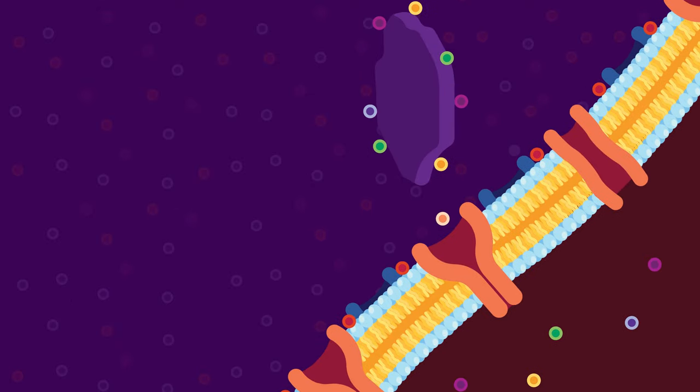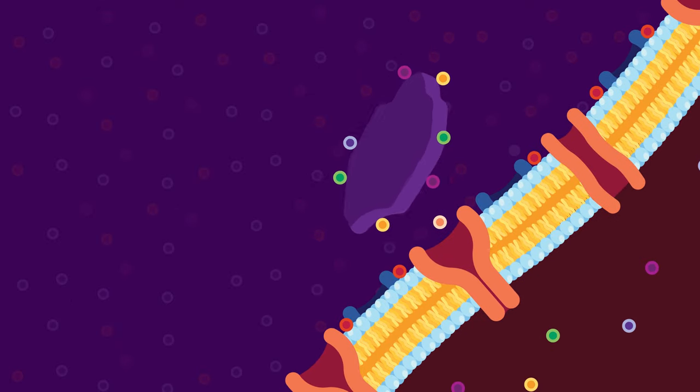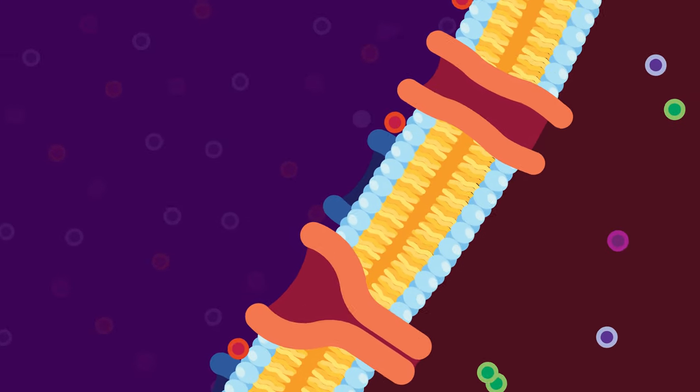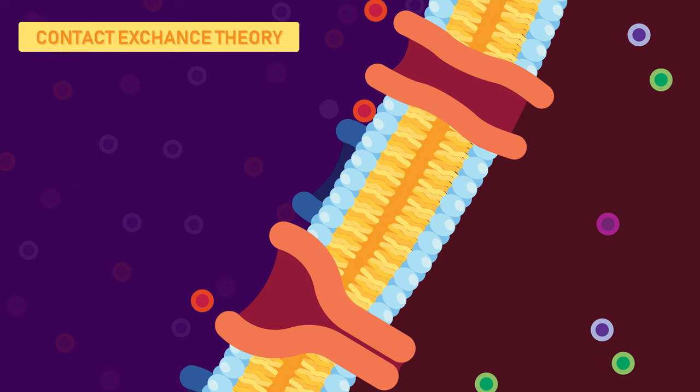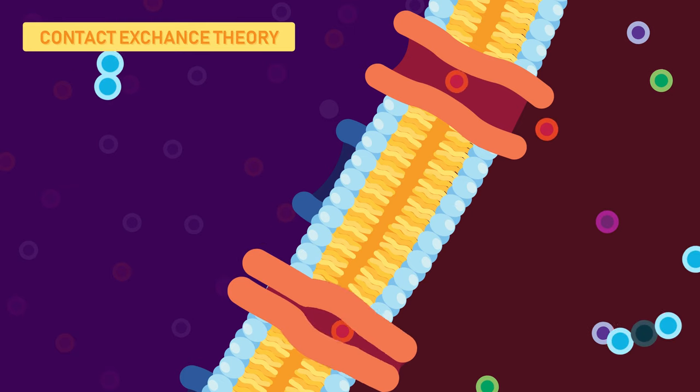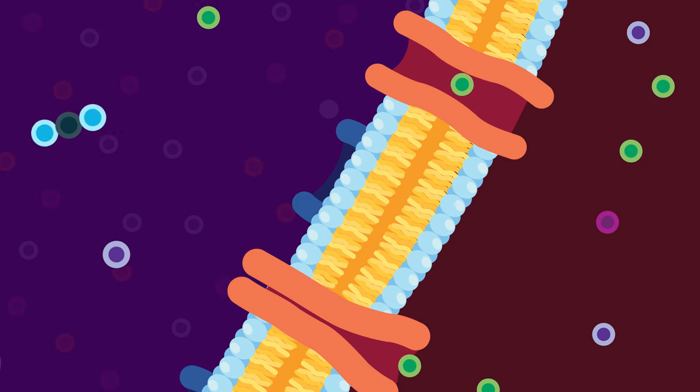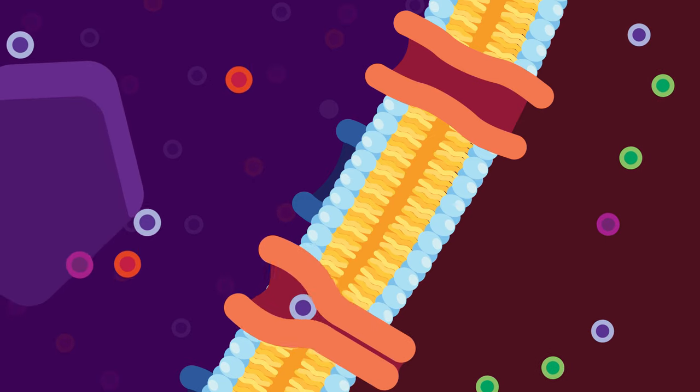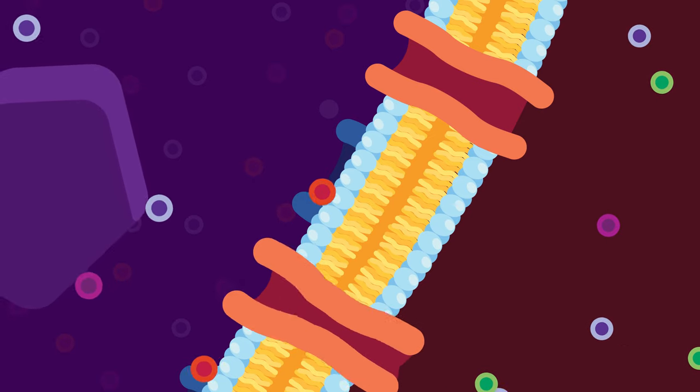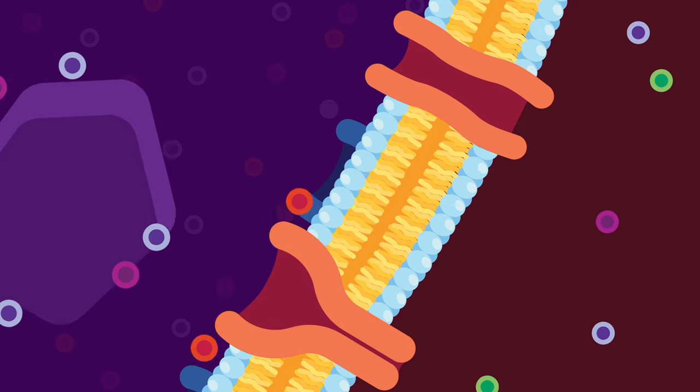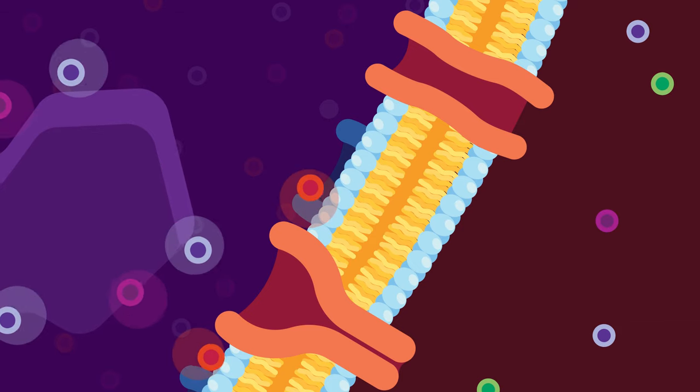Ion exchange can be explained by contact exchange theory. According to contact exchange theory, ions can be taken up by the plant without being dissolved in soil. The ions absorbed onto the root surface and the ions attached to clay particles are not entirely static. They oscillate in a small volume of space.